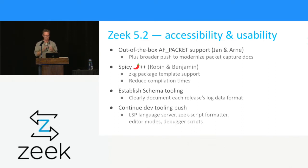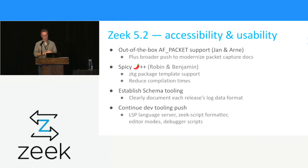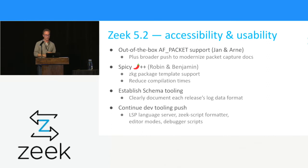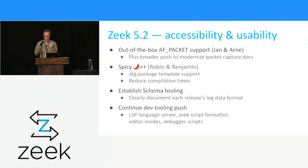Next on the list is Spicy — not a new version of Spicy, but much more going on around it, mainly in Robin and Benjamin's department. An exciting thing about to happen — not technically tied to 5.2 but can happen before — is zkg package templating support for Spicy-enabled Zeek packages. You can run a one-liner and then get going on Spicy analyzer development that ships as a Zeek package without having to figure out exactly which bits go in which files, regardless of whether it's at the packet level or flow level. There's also ongoing work on reducing compilation times — it's looking quite good.